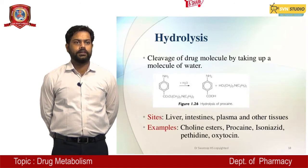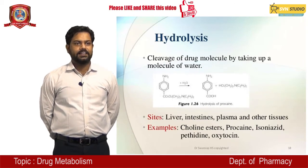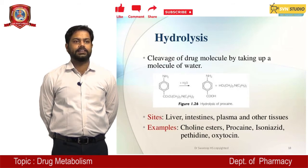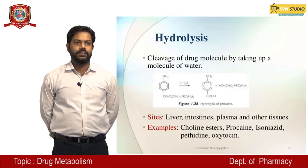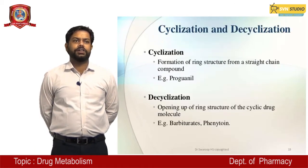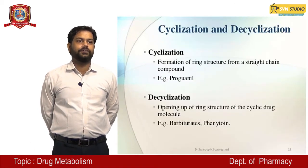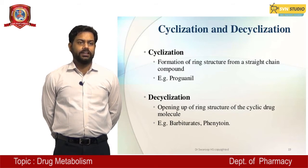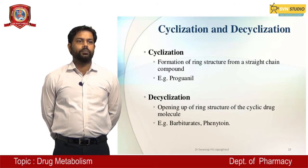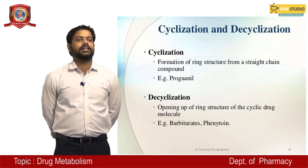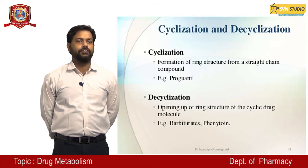Hydrolysis: cleavage of the drug molecule by taking up a molecule of water. Sites are liver, intestine, plasma, and other tissues. Examples: choline esters, procaine, isoniazid, pethidine, and oxytocin. Cyclization: formation of a ring structure from a straight-chain compound — example, proguanil. Decyclization: opening of the ring structure of a cyclic drug molecule — examples include barbiturates and phenytoin.